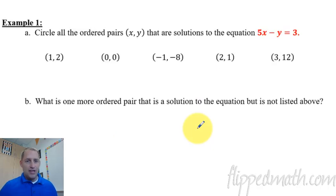So to start us off here, we have 5X minus Y equals 3. Make sure you get that written down. And we're trying to circle which of these are solutions to this equation. So the first thing we do is remember that the first number is the X, the second number is the Y. So don't get those two mixed up.